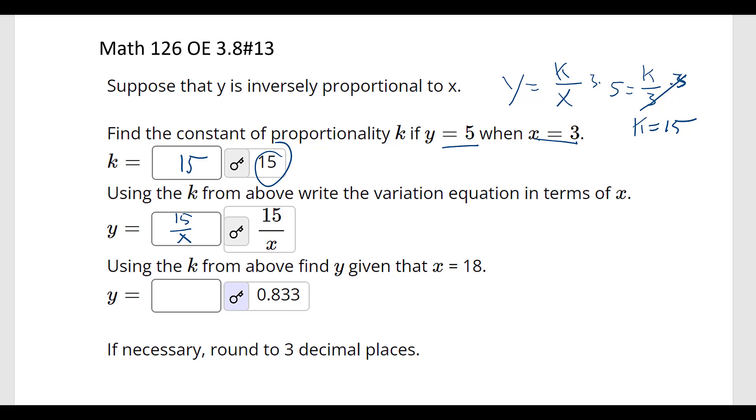And using the k from above, find y given that x is 18. So y would be 15 over 18, which reduces to 5 sixths. And as a decimal, that's 0.833333, goes on forever. Okay, so that's how we're doing this.